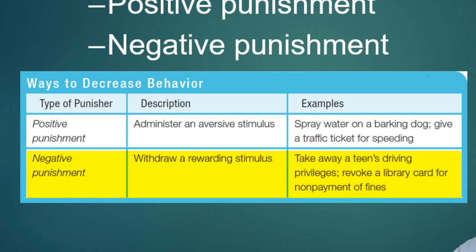Negative punishment means taking away something positive — get away from the idea that positive means good and negative means bad. Giving a child a spanking to stop behavior is positive punishment because you added the spanking. Negative punishment is withdrawing something rewarding, like taking away a teenager's car. Or taking away a driver's license when tickets — the positive punishment — weren't working.